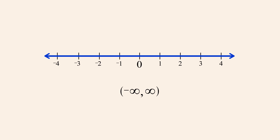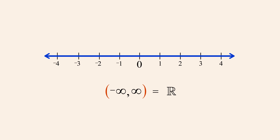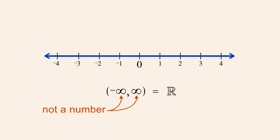And if an interval has neither an upper nor lower bound, we say that the interval is unbounded on both ends. This interval therefore includes the entire number line and is equal to the set of real numbers. In interval notation, an infinity symbol is always enclosed with a left or right parenthesis. This is because the infinity symbol does not represent a number — it is a symbol which indicates that the interval goes on forever in the positive or negative direction. We therefore use the parentheses to indicate that the infinity symbol is not a member of the set.